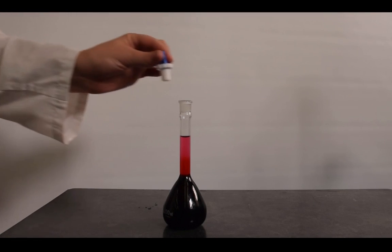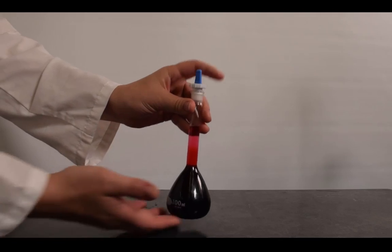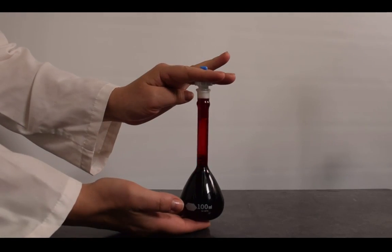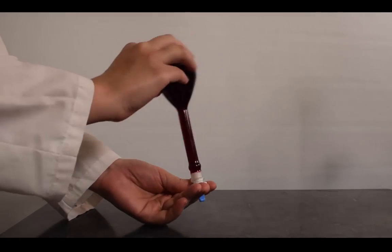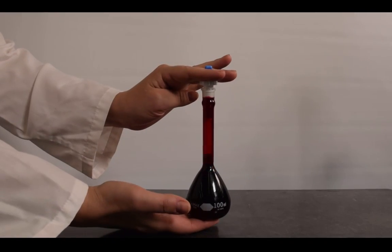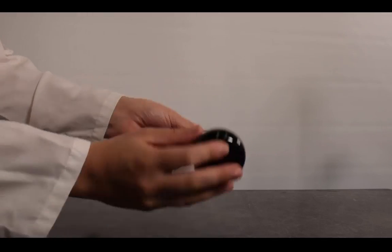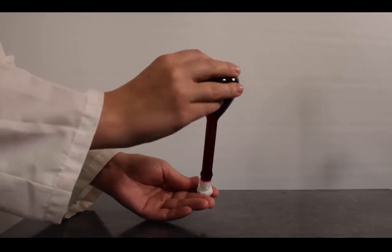Once diluted, stopper the flask. Invert the flask while holding the stopper and shake. Return the flask to its upright position and allow the air bubble to reach the top of the flask. Repeat these mixing steps for a total of ten times.